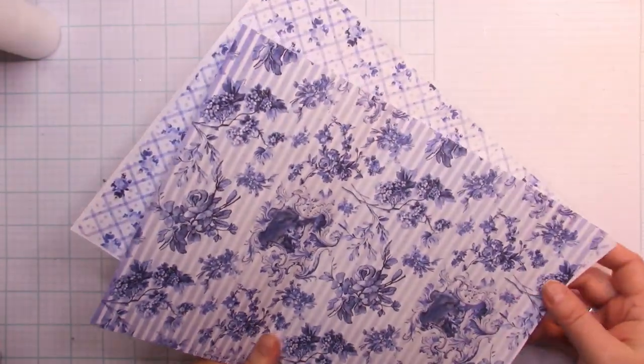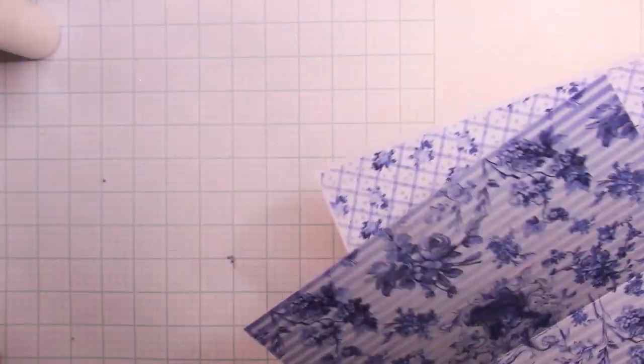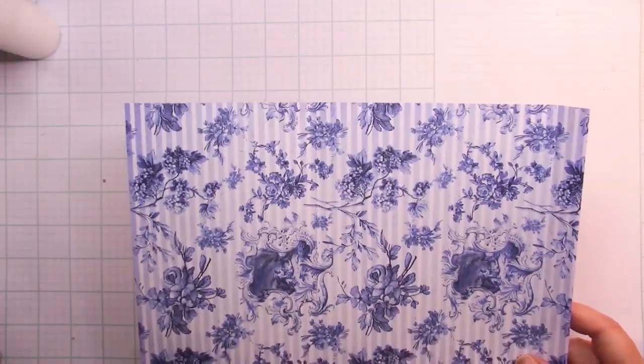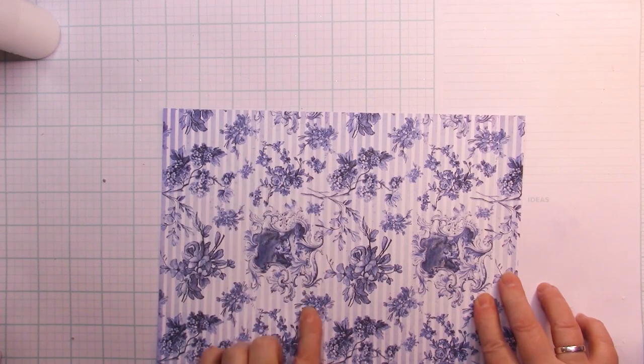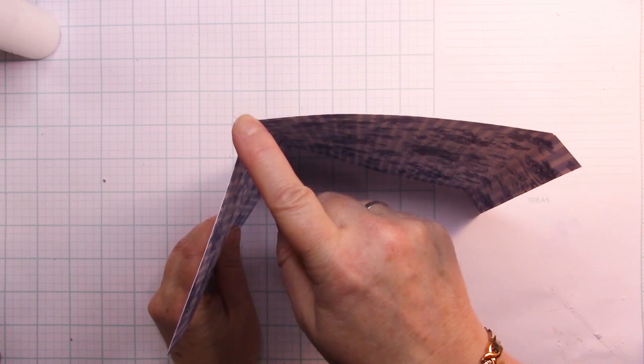First you're going to want to have your paper. I used a digital and I printed it on cardstock, and then I cut off that little trim that's on the outside. What we're going to be doing here is putting a couple creases in.